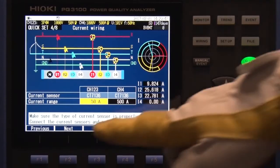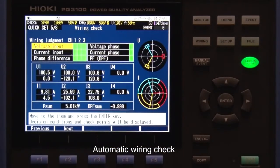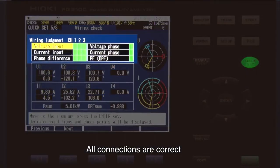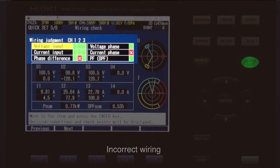The PQ3100 automatically checks for correct wiring and warns you if there is an error. This shows that all connections are correct. Incorrect wiring is indicated in red. Yellow signals that you should double-check the wiring.